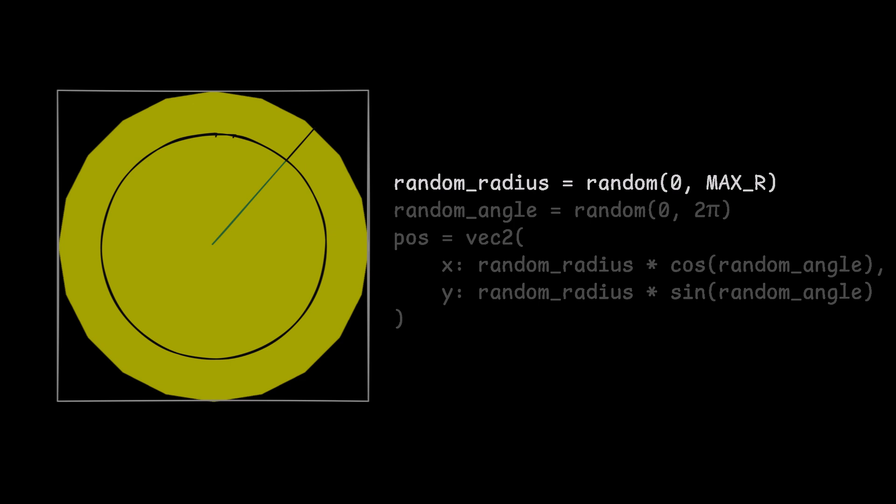There certainly is, and to implement it we'll need to use trigonometry. But let's go step by step. First we need to get a random radius from 0 to the radius of the circle. Now we know which ring will be given the piece, and then we need to pick a random point on the ring.